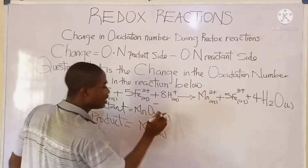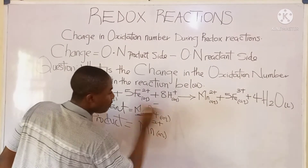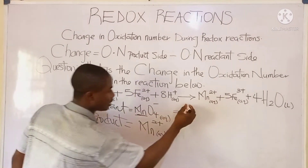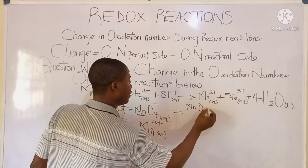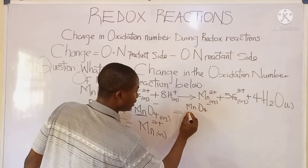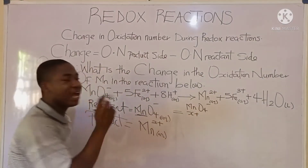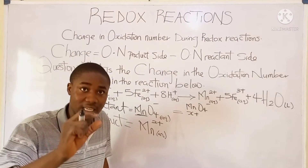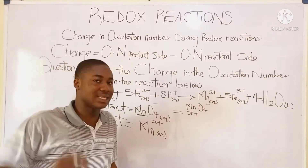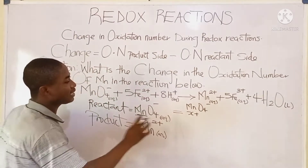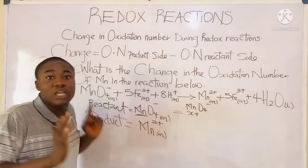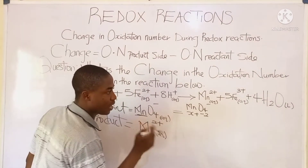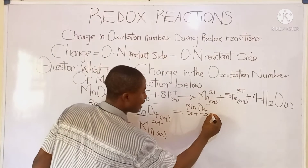Since we are looking for the oxidation number of manganese, we'll make it X. So for MnO4⁻, we write X plus the oxidation number of oxygen. The oxidation number of oxygen in most states is negative 2, but in peroxide it's negative 1. Here it is oxygen in a normal compound, so the oxidation number becomes negative 2. We have 4 atoms of oxygen, so we multiply: 4 times negative 2.